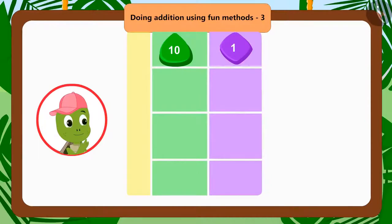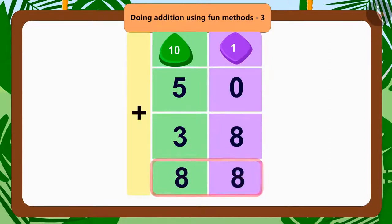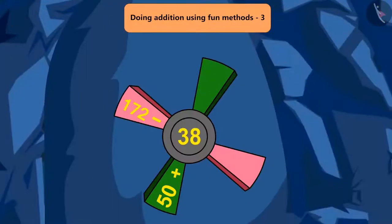Let us first solve the addition question on the windmill. If we add 38 to 50, what will be the total? That's right, 88. Come, let's fill the blank space.